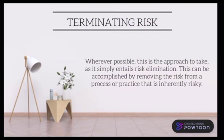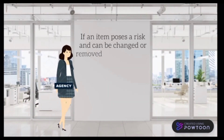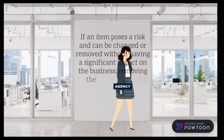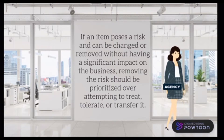The fourth T is terminating risk. Whenever possible, this is the approach to take, as it simply entails risk elimination. This can be accomplished by removing the risk from a process or practice that is inherently risky. If an item poses a risk and can be changed or removed without having a significant impact on the business, removing the risk should be prioritized over attempting to treat, tolerate, or transfer it.